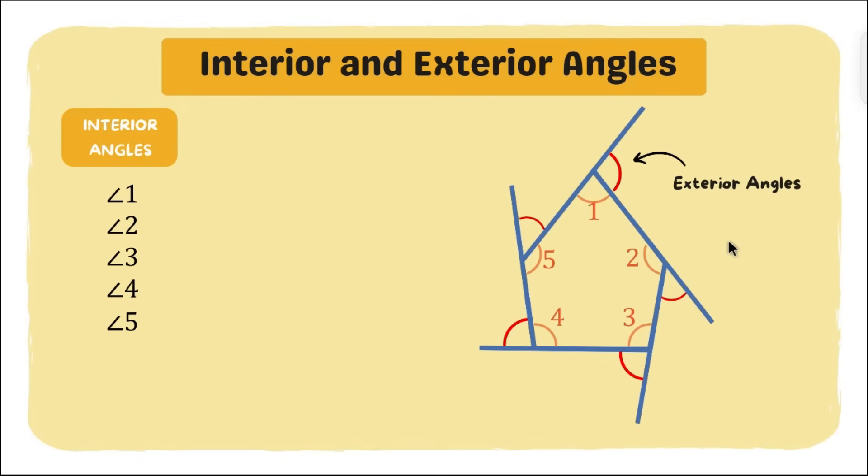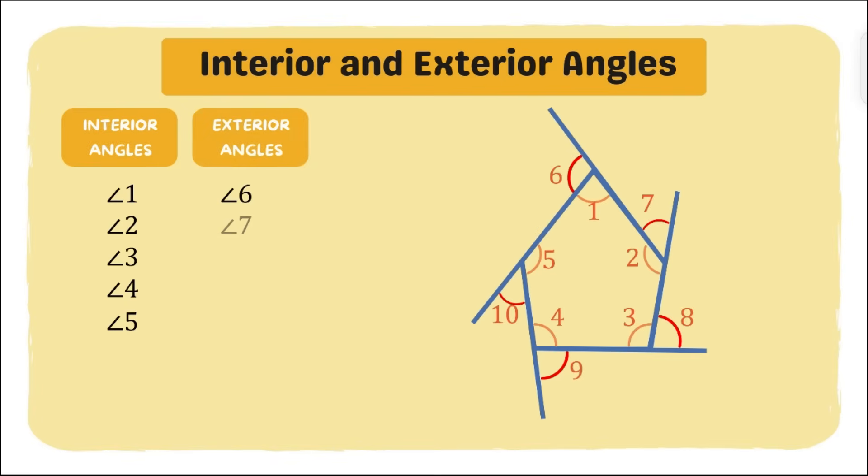Now let's label these exterior angles. We have angle 6, angle 7, angle 8, angle 9, and angle 10. So let's list them all here on the left side. Now I want you to take a look at these angles and let's pair them up together. So angle 1 is paired up to angle 6, angle 2 is paired up to angle 7, 3 and 8, 4 and 9, 5 and 10.